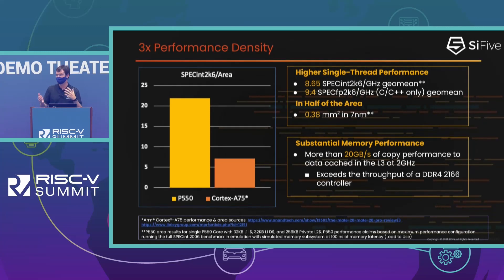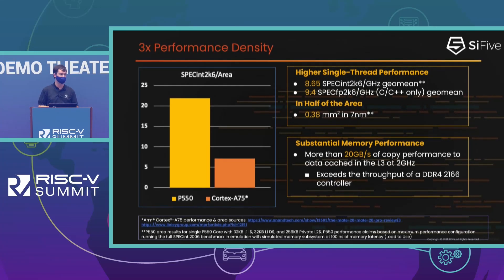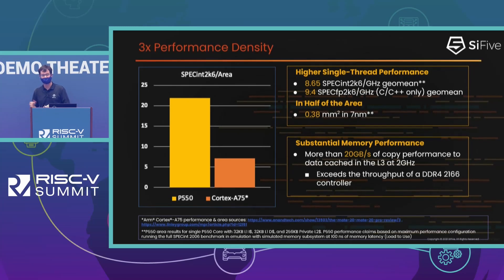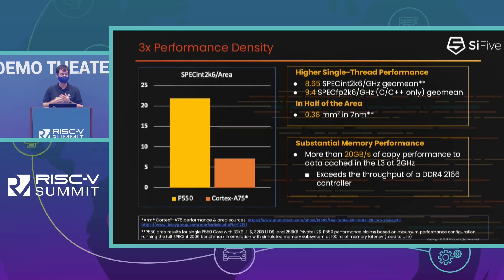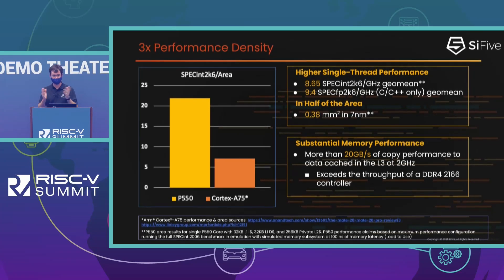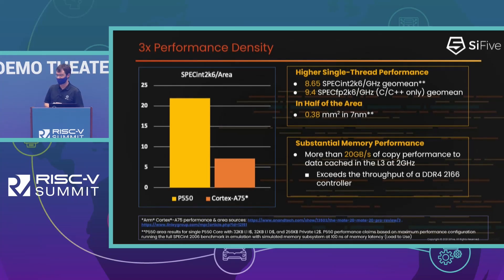Our original metric to compare against was the A72, which was a very widely used core. We actually overshot our internal mark and are even a little bit faster than the ARM Cortex-A75 while being smaller. Put that together and we're like three times the performance density. We're very proud of that and hope it would be useful to you.